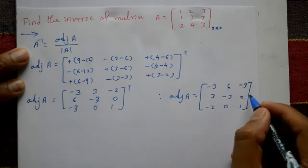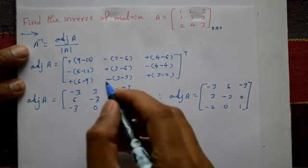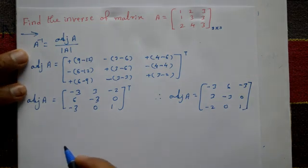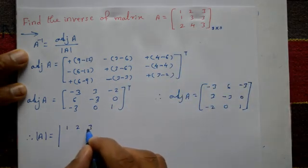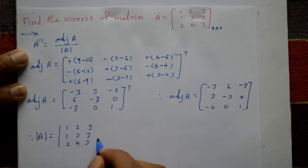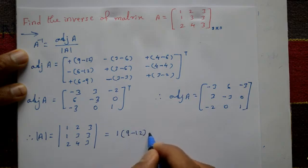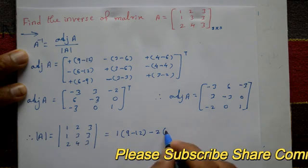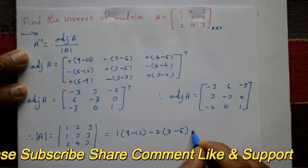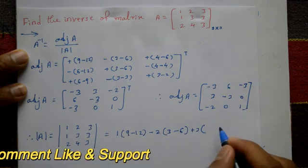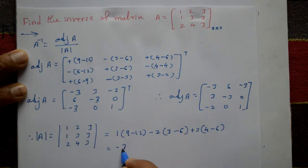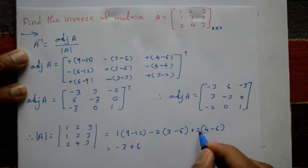Next we require the determinant of A. Expanding the determinant using elements one, two, three, three, one, three, three, two, four: one into multiplication nine minus twelve, minus two into three minus six, plus three into four minus six. This equals minus three, plus six, minus six. The plus and minus terms cancel, giving determinant of A equals minus three.